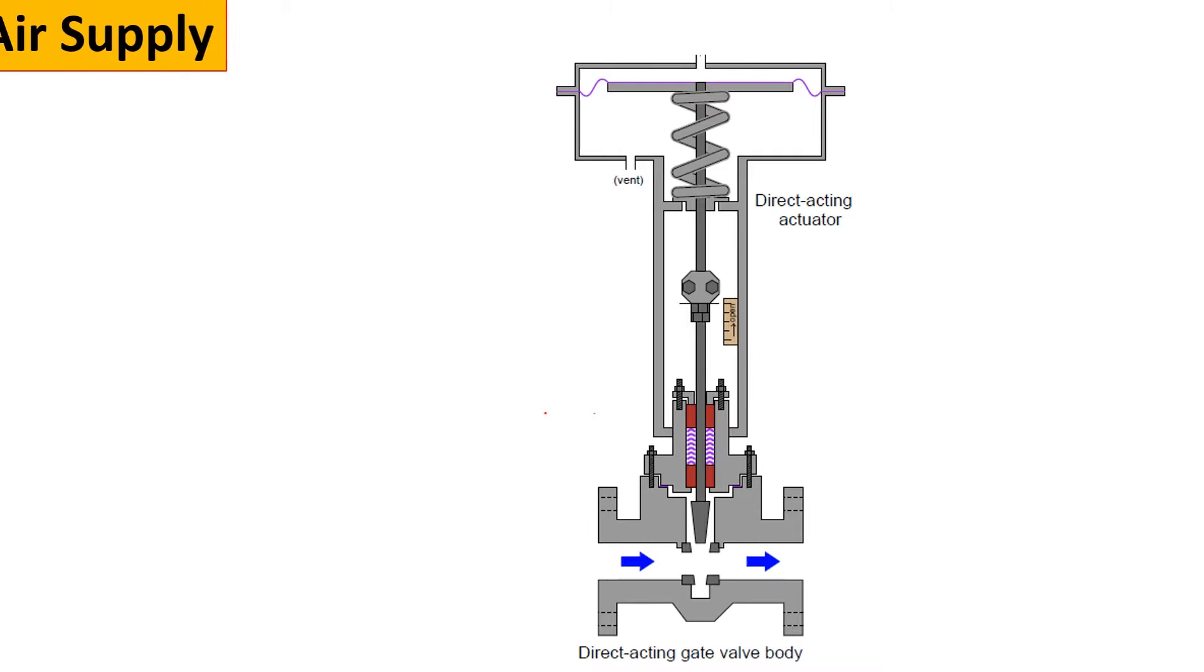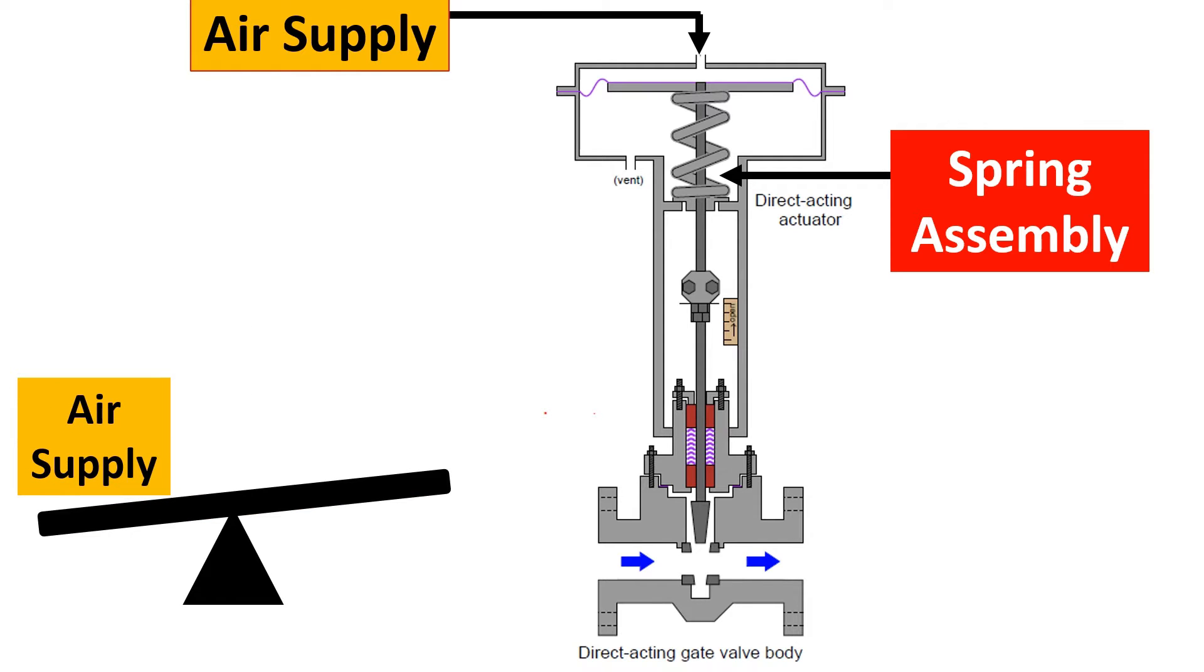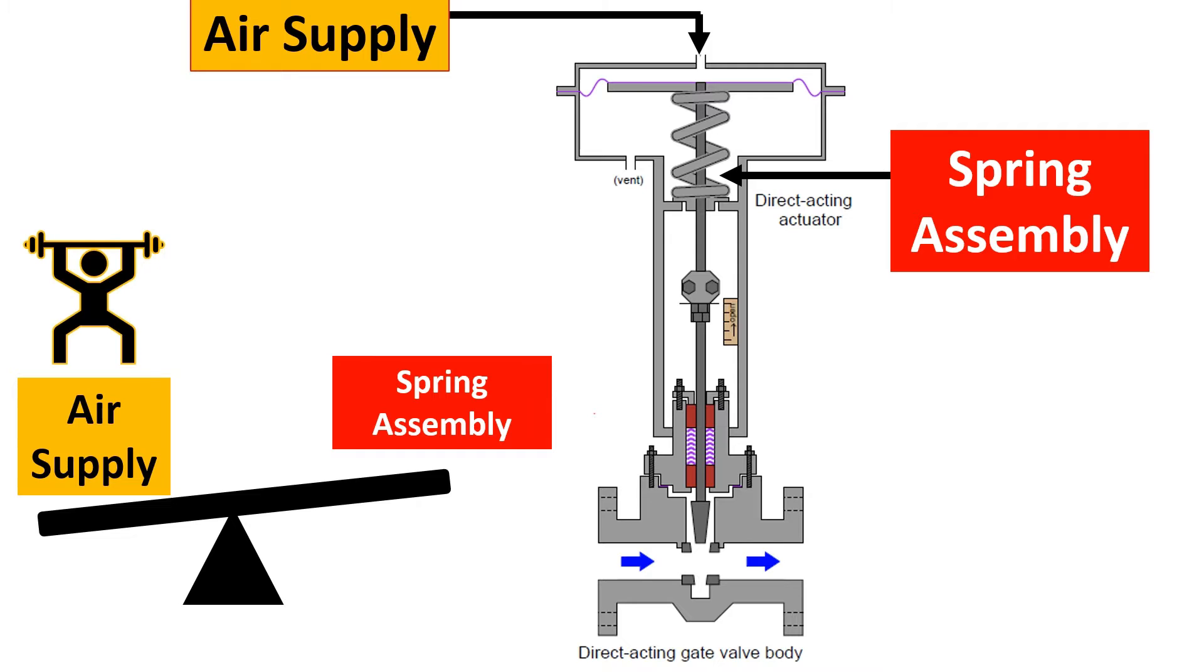So the air supply design is something where you have to see that if the air, this is a direct acting actuator and a direct acting valve. So here when you give an air supply what is resisting the air supply, it is the spring assembly. Now imagine this to be like a seesaw. Here the air supply has to overcome the friction of the spring assembly in order for the valve to function.